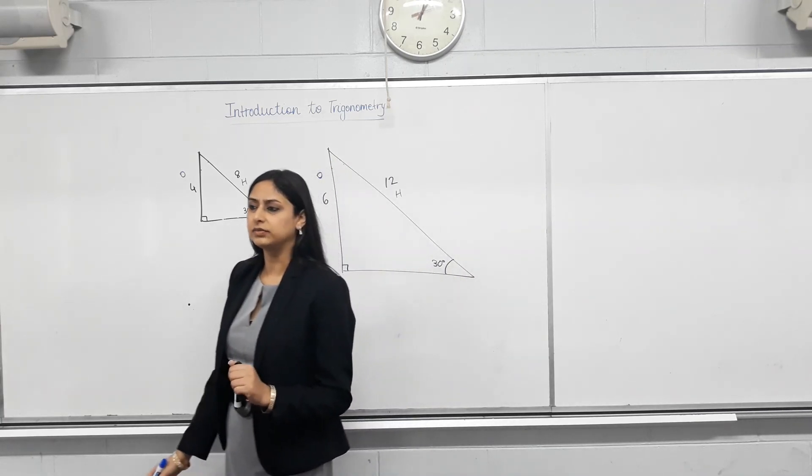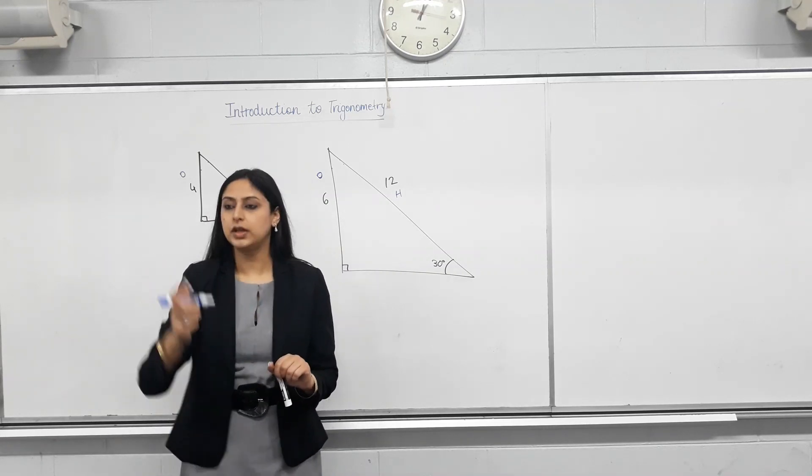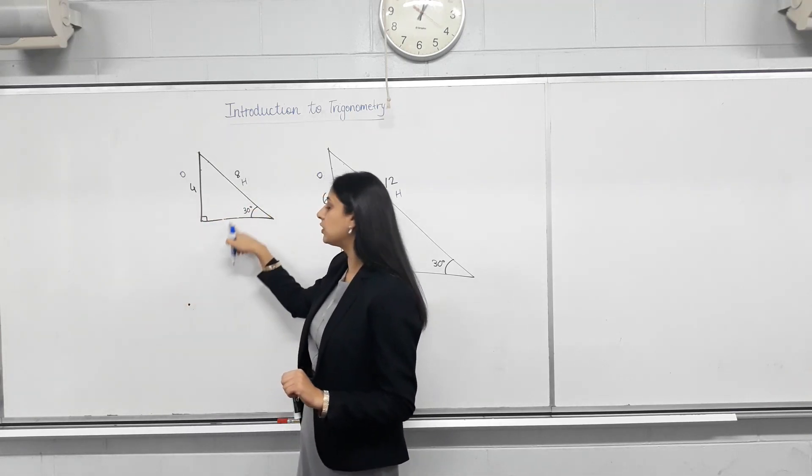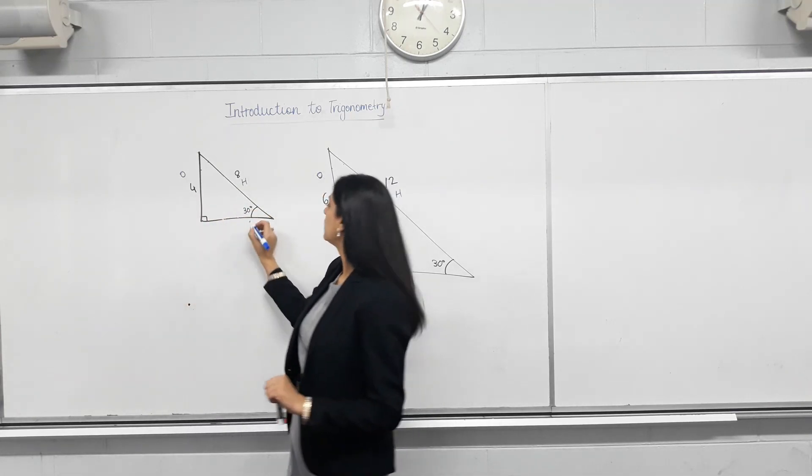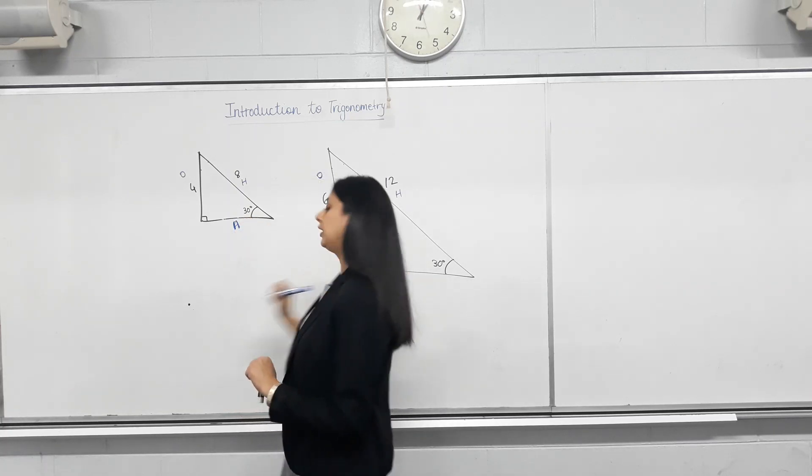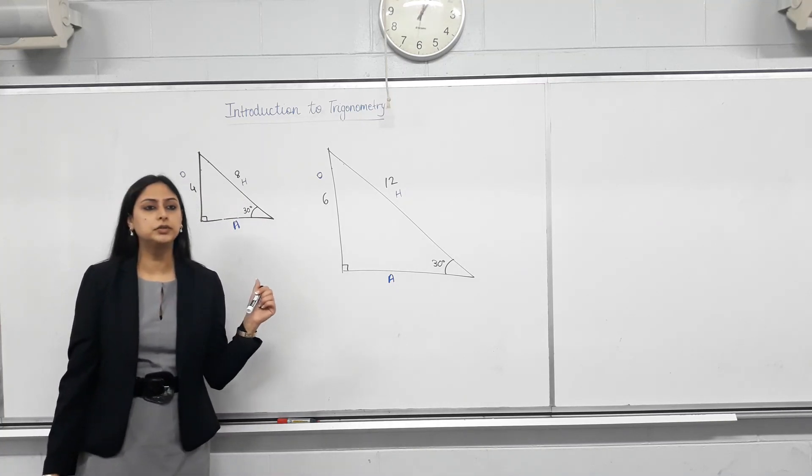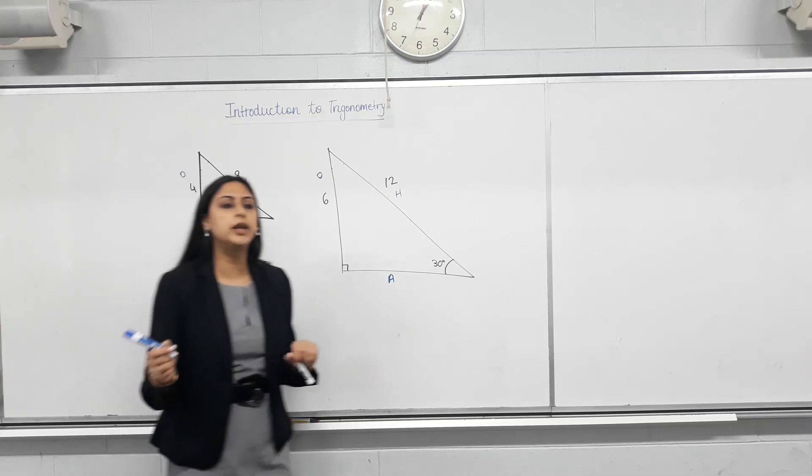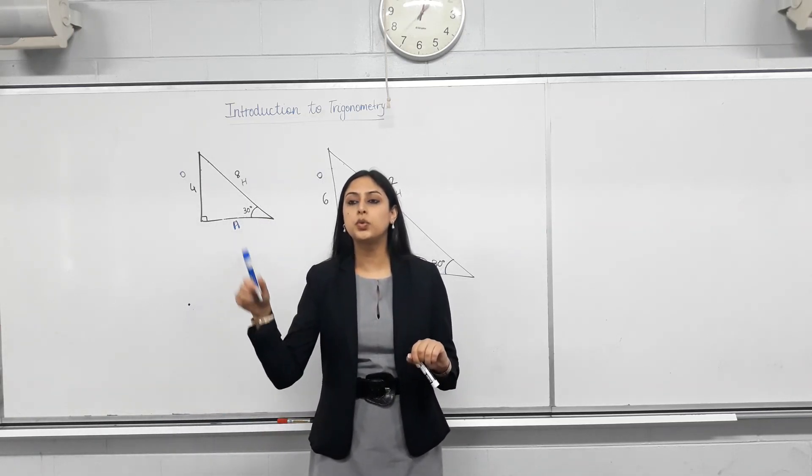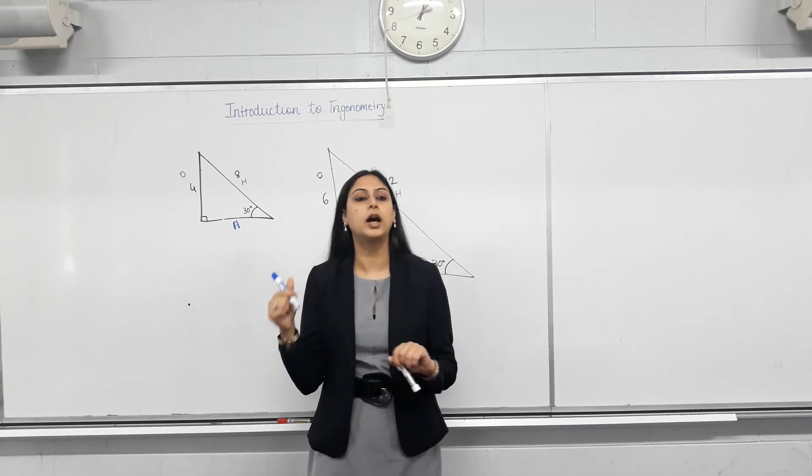Yes. So, we label it as O. So, for this one, opposite to the 30 degree angle. This is the side. Label it as O. What does adjacent mean? Adjacent. You're sitting adjacent to him. You're sitting next to him. So, isn't this side adjacent to the angle? Next to the angle? So, we call it the adjacent side. And the labeling is complete.